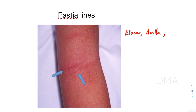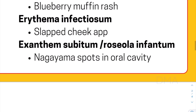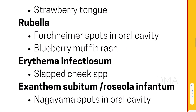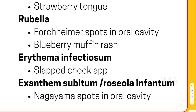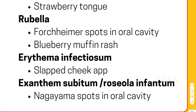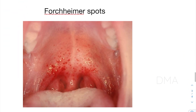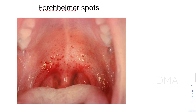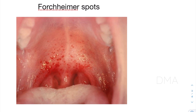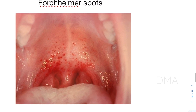I hope you are all familiar with the strawberry tongue. Then comes rubella. In the case of rubella, we are able to observe Forchheimer spots in the oral cavity and the blueberry muffin rash. Forchheimer spots look like red dots on the soft palate of the mouth, as shown here.